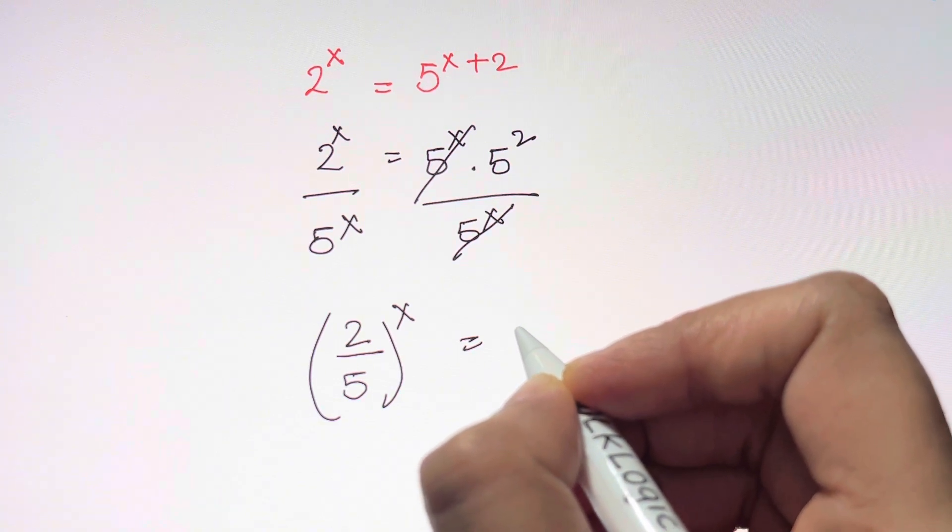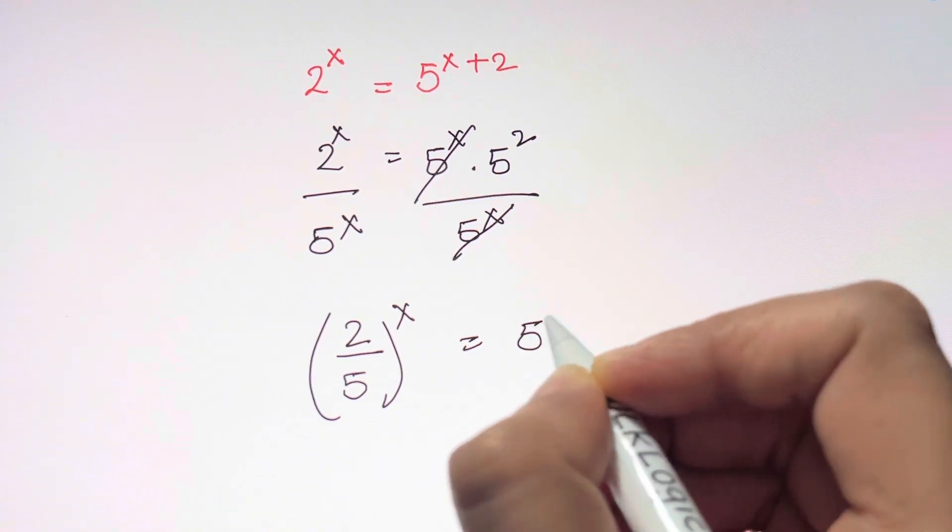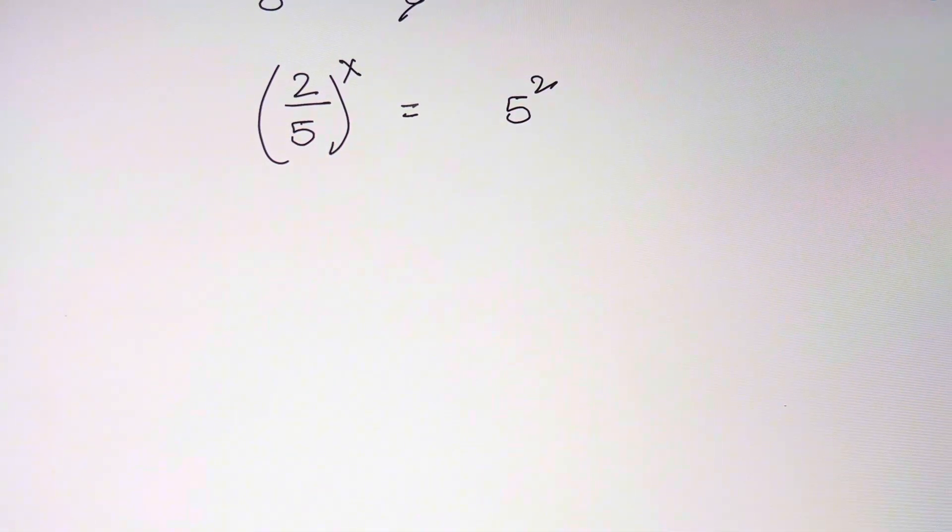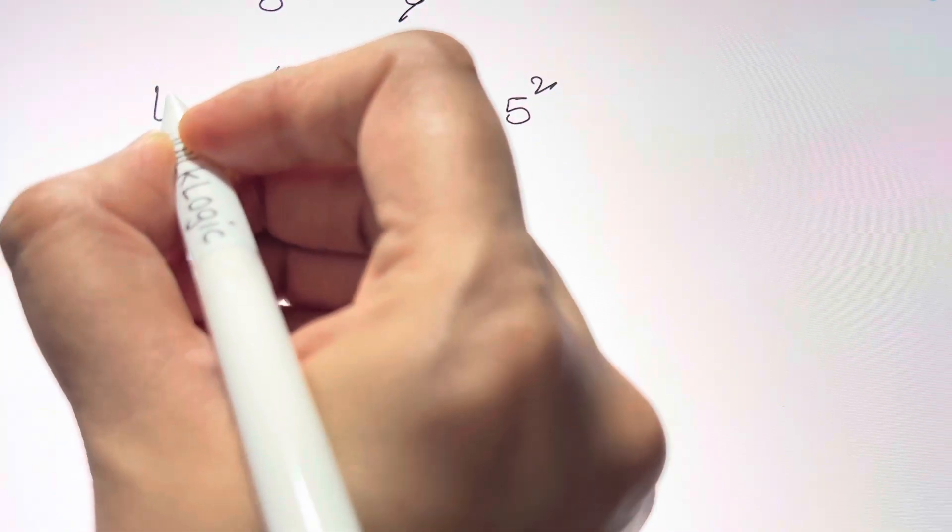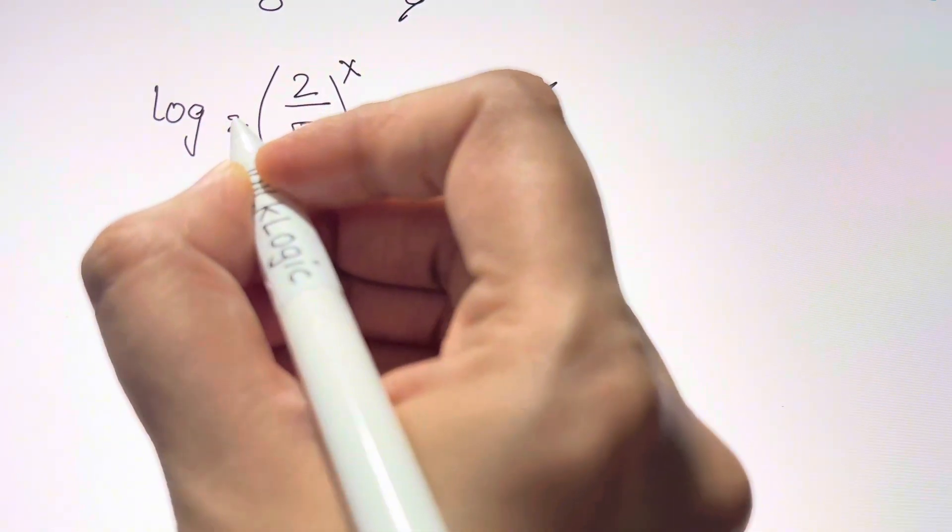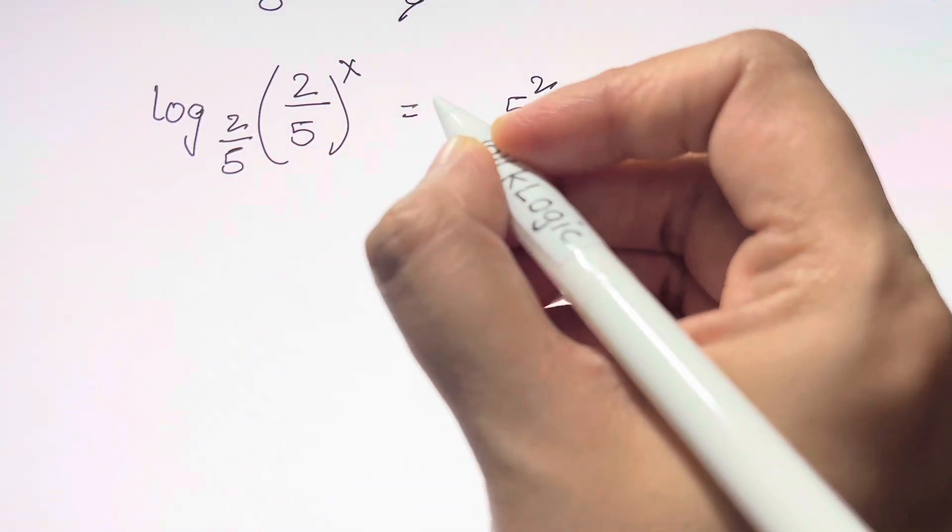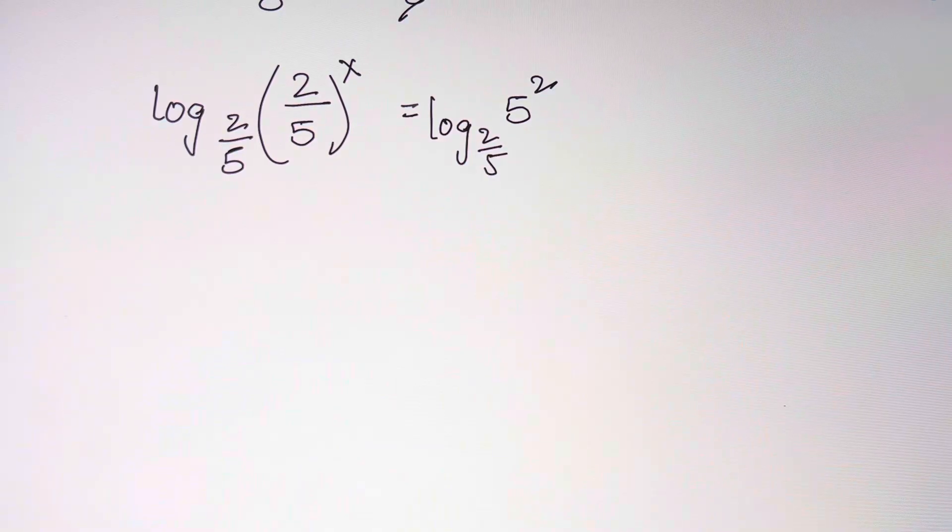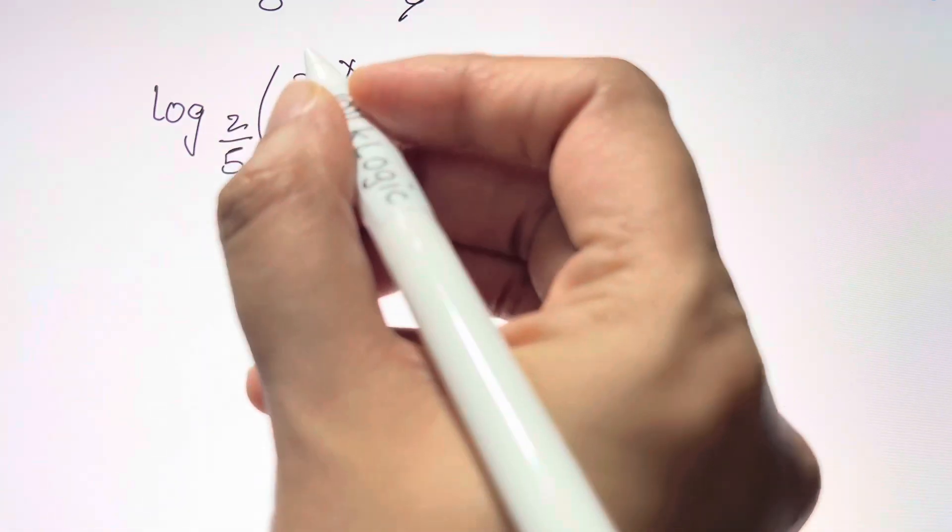5^2 is 25, I can write it, but I'm going to write it the same way as 5^2. The next thing we're going to do here is apply log on both sides, so you can write log base 2/5 and here as log of base 2/5.